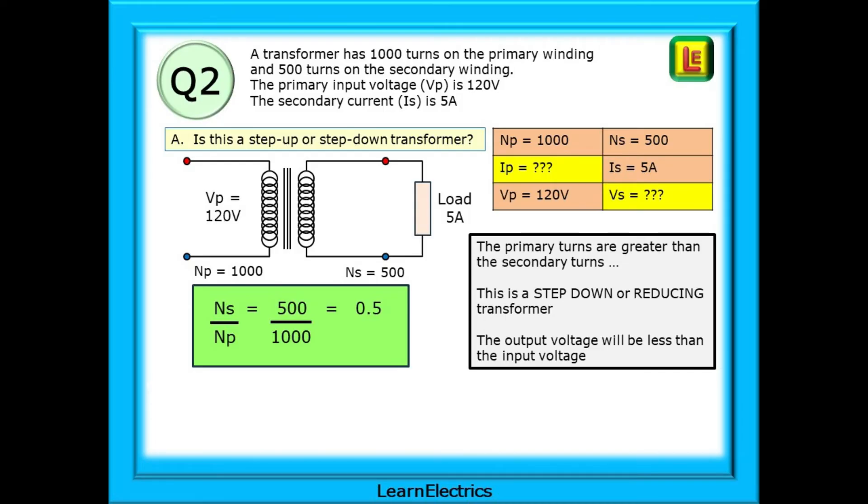The output voltage will be less than the input voltage. To show this mathematically, NS divided by NP is 0.5. It is less than 1, so the output voltage will be smaller than the input voltage. It will be reduced.